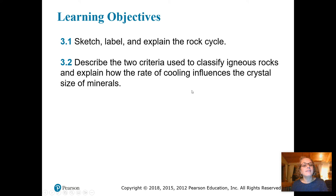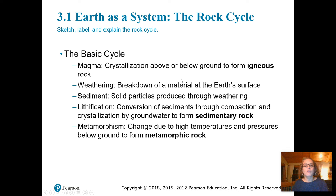Section 3.1 discusses the rock cycle. It's important to note that we can begin at any point in the rock cycle. The basic outline begins with magma and the crystallization or cooling of the magma, either above ground or below ground, forming igneous rock. Rock at the surface is then weathered or broken down into sediment, which can be compacted and cemented together to create sedimentary rock. Finally, heat and pressure on an existing rock changes its structure or composition, forming a metamorphic rock.